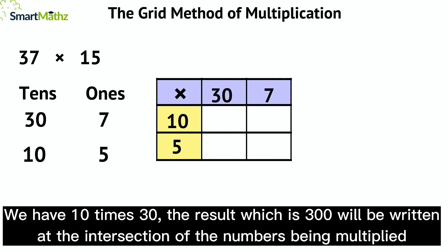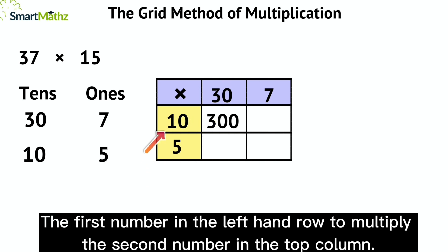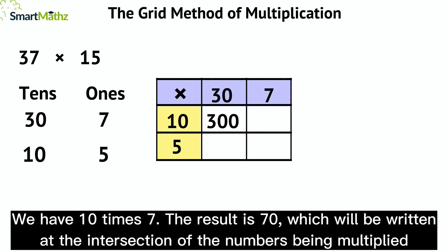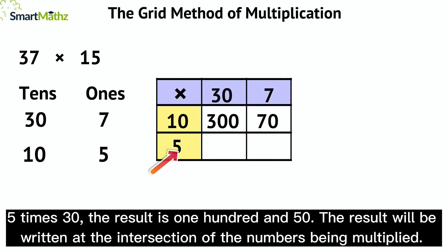The first number in the left-hand row to multiply the second number in the top column: we have 10 times 7. The result is 70, which will be written at the intersection of the numbers being multiplied. 5 times 30, the result is 150.